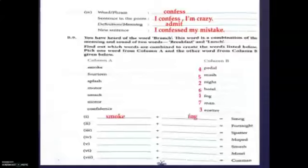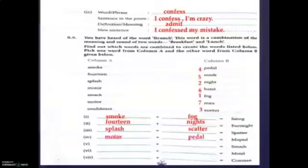Smog is the combination of smoke and fog. Fortnight is fourteen nights. Sputter is splash plus scatter. Moped is motor plus pedal. Smash is smack plus mash. Motel is motor plus hotel. Conman is confidence plus man.